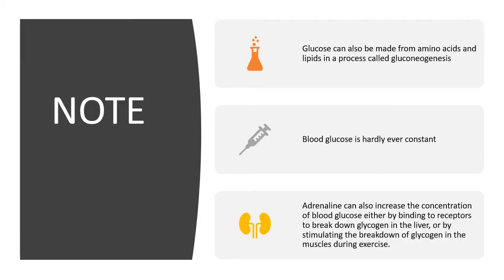It is also important to note that you can make glucose from amino acids and from lipids. If your body is totally deprived of glycogen and you're not taking in any glucose, the body will resort to using lipids and amino acids to make glucose in a process called gluconeogenesis. As the name suggests — gluco meaning glucose, neo meaning new, genesis meaning beginning or making — it is simply a process through which glucose is made from substances that are not typically carbohydrates.